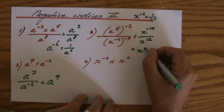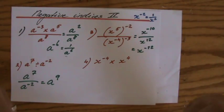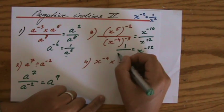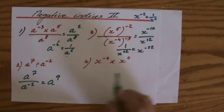The second law: if you're dividing and the bases are the same, you subtract the indices. Minus 10 minus 12 is minus 22. So the answer is a to the power minus 22, and in positive index notation that would be 1 over a to the power 22.